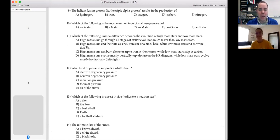Number 11, which of the following is not a difference in the evolution between high mass stars and low mass stars? High mass stars go through all stages of stellar evolution much faster than low mass stars, that is true. High mass stars end their lives as neutron star or black hole while low mass stars end as white dwarfs, that's true. High mass stars can burn elements up to iron in their cores while low mass stars stop at carbon, that's true. I'm hoping D is not true. High mass stars evolve mostly vertically on the HR diagram while low mass stars evolve mostly horizontally, that's not true.